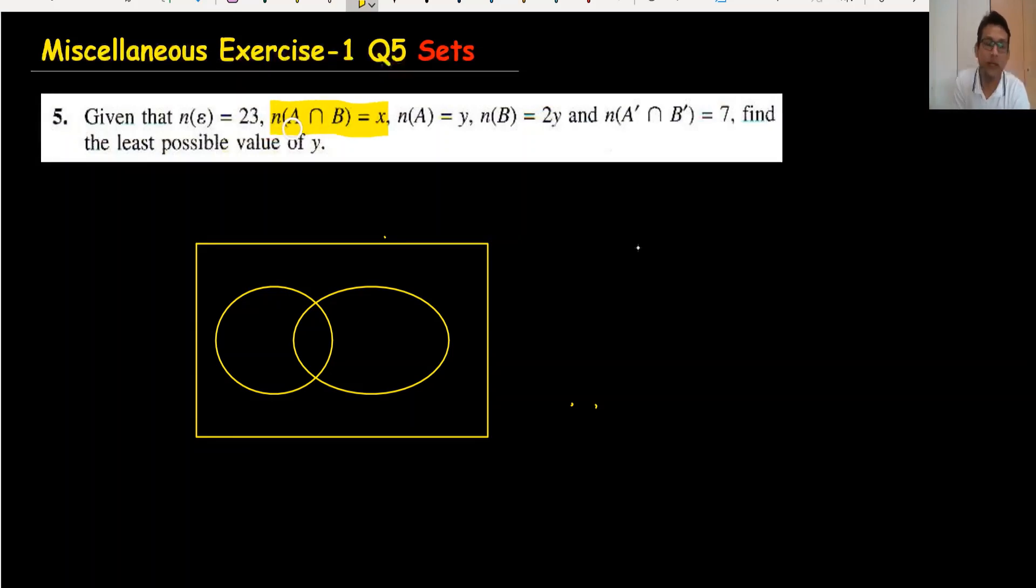The number of elements in A intersection B is x. The number of elements in set A is y, so I'll write y minus x for A only. The number in set B is 2y minus x for B only. The elements in A complement intersection B complement are seven, written outside.